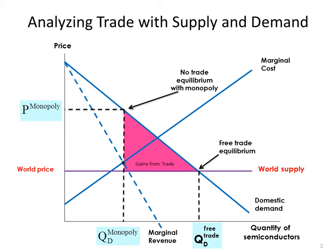We get a much bigger increase in the quantity demanded and the quantity supplied. We also get some resource savings, though they're smaller — smaller precisely because the monopolist was producing less. So when we shift from monopoly production to world production at lower costs, from the high-cost monopoly to the lower-cost world production, we get some resource savings, and they're small simply because the monopolist wasn't producing that much. Comparing this diagram with the previous one, the welfare gains from shifting from monopoly to free trade are larger by this amount than if we shifted the competitive industry to free trade.